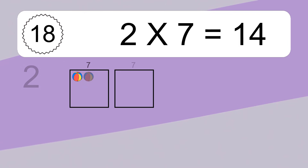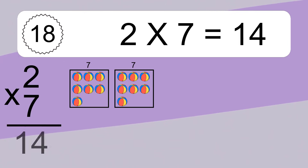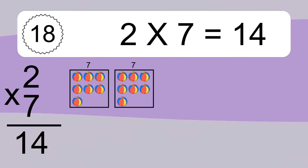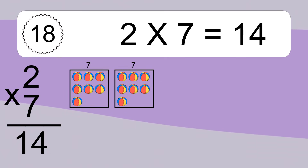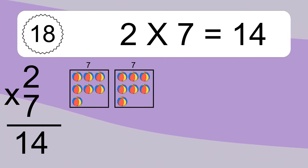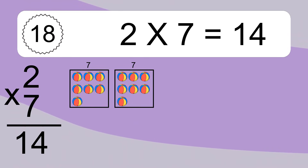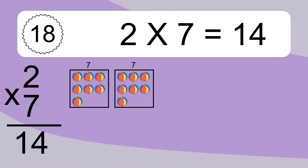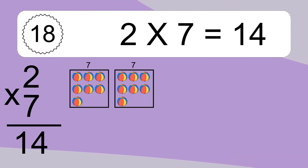2 times 7 equals 14. We have 2 boxes and each box has 7 colorful balls inside. If you count all the balls in all the boxes together, you will have 2 times 7 balls. This equals 14 balls.